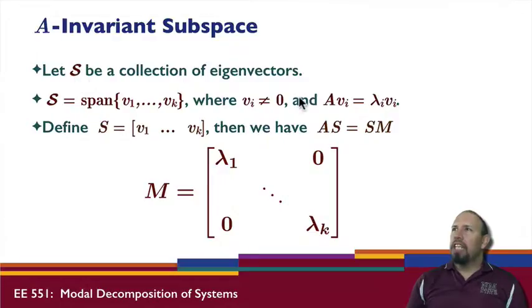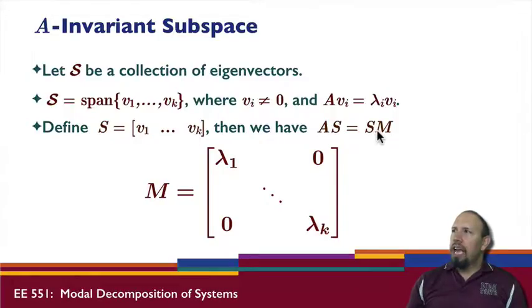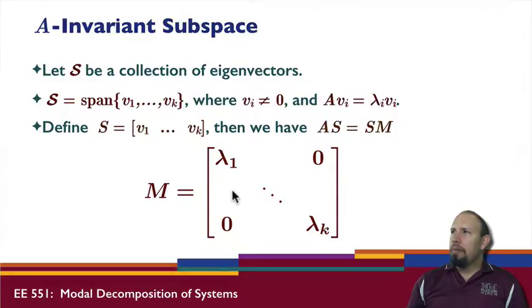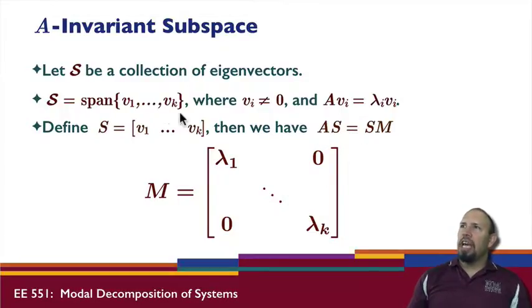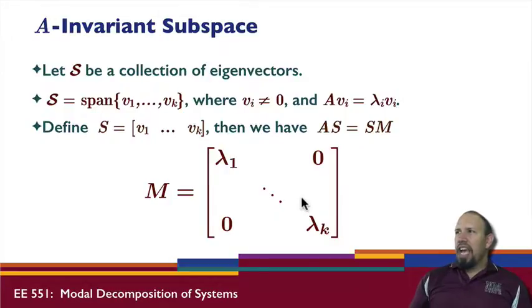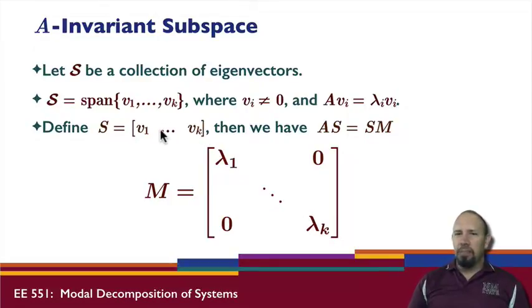Let S be a collection of eigenvectors and let capital S be the matrix of those eigenvectors. Then AS equals S times M, where M is a diagonal matrix of eigenvalues. In this case we actually know exactly what M is and it's diagonal. Notice this is not the same as AV = V·Λ since we only have K eigenvectors, not the full set — but we still get a diagonal matrix with a subset of the eigenvalues.